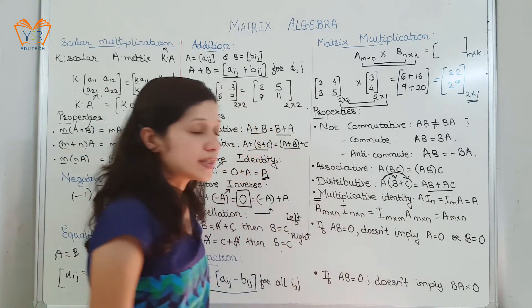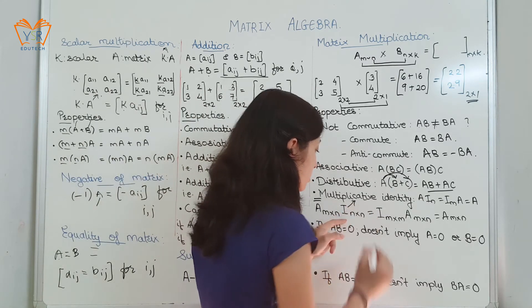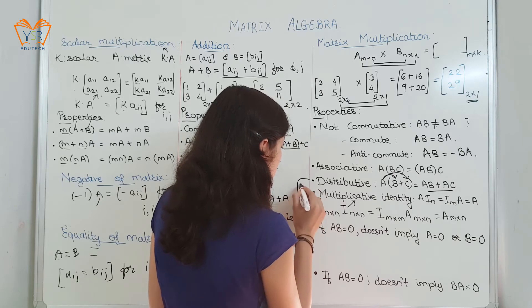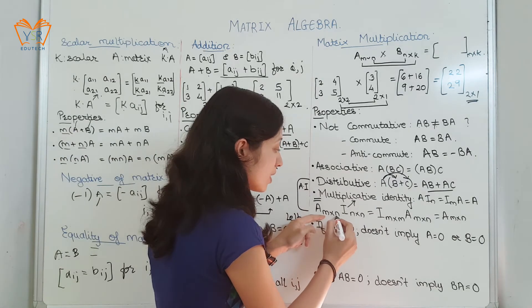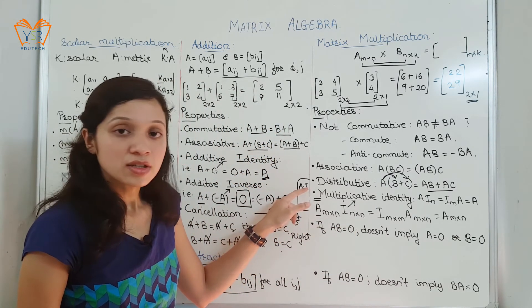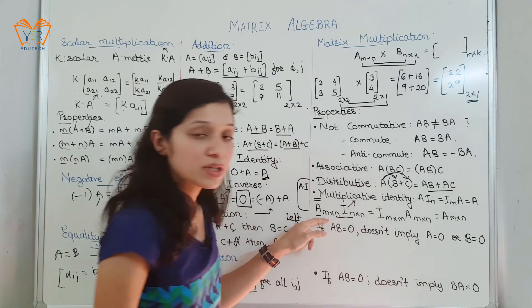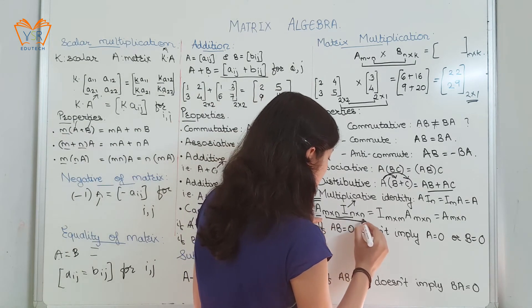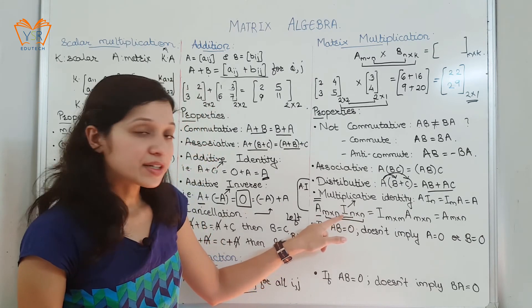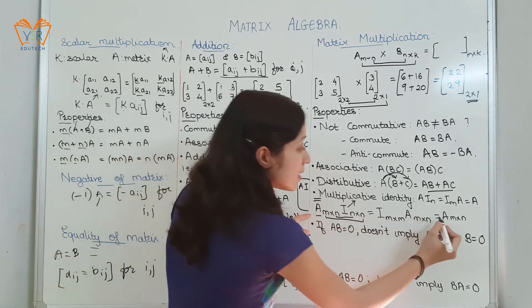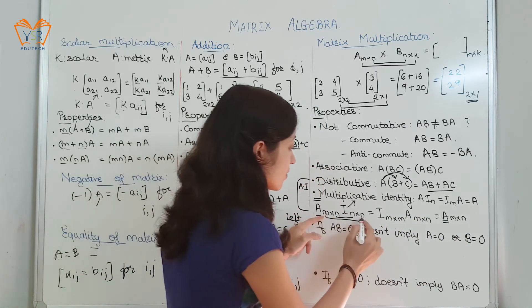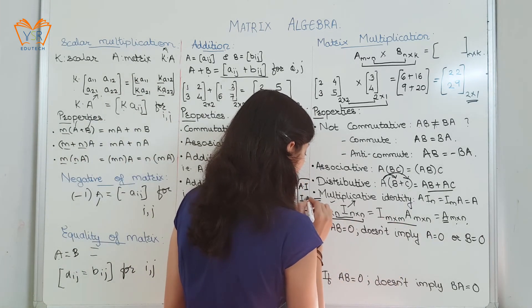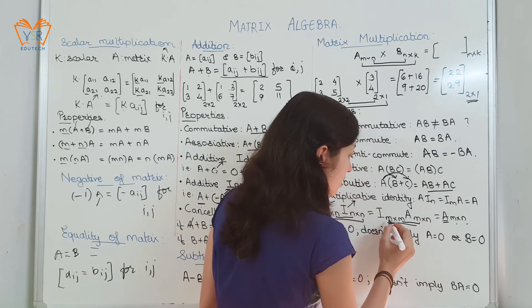This is an important property — multiplicative identity. The unit matrix (identity matrix) is called the multiplicative identity. Consider multiplication A into I: if A is of size M×N, for multiplication the number of columns must equal the number of rows, so the unit matrix is of order N×N and the resulting size is M×N. Whether we compute A×I or I×A, the result is the same matrix of size M×N.